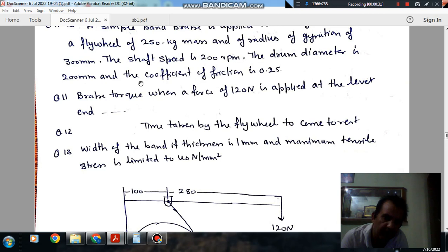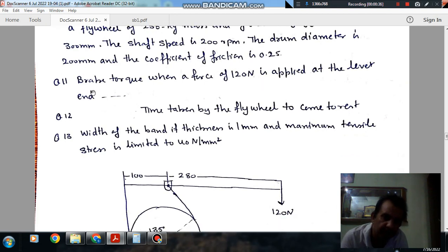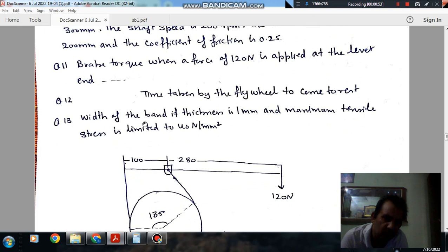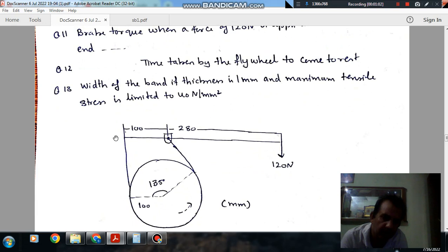The shaft speed is 300 rpm, the drum diameter is 200 mm, and the coefficient of friction is 0.25. Question 11: the brake torque when a force of 120 Newton is applied at the lever. Question 12: the time taken by the flywheel to come to rest. Question 13: width of the band if thickness is 1 mm and maximum tensile stress is limited to 40 N/mm².